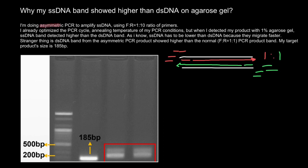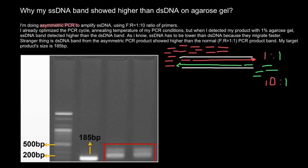But when we perform asymmetric PCR, we use more primers of one kind — for example, forward primers. That leads to producing more of one product than the other. For example, the new ratio would be 10 to 1. As a result of the PCR, we are going to have more of the one single-stranded DNA than the other.